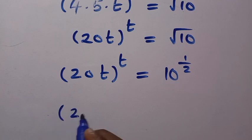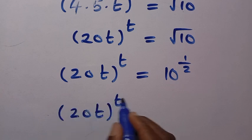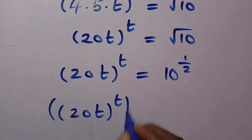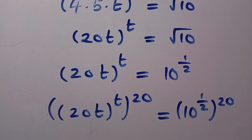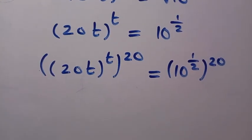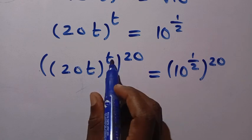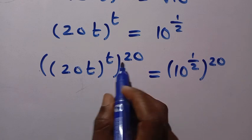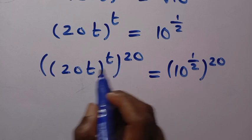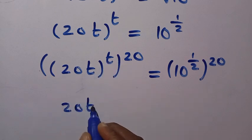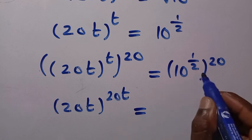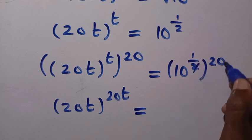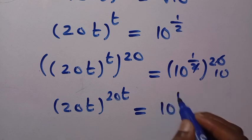We raise (20t)^t to the power of 20, and also raise 10^(1/2) to the power of 20. By the rule of exponents, we multiply the powers t and 20 to get 20t. So the left side becomes (20t)^(20t), and the right side becomes 10 raised to the power of 10.